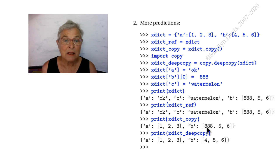But the 'c' did not come in, so that's nice. That's shallow. Our xDict_deepcopy, totally independent. Nothing that happened to xDict also happened to the xDict_deepcopy.